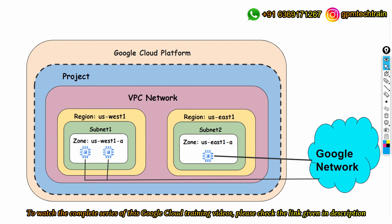How is this communication possible? If you remember, in the first slide we discussed Google Cloud's physical network and how they connected data centers across the globe. Since this VPC is running on top of that physical network, though the compute engines are in different geographical regions, they are still able to communicate through the Google Cloud network because they are part of the same VPC.